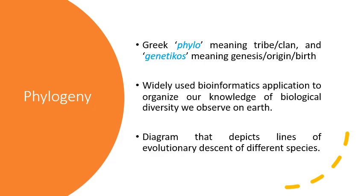You may have studied in basic zoology how organisms are placed into groups — sometimes grouped according to their physical appearance and different characteristics. In phylogenetics, we use gene sequences to study the evolutionary history of species.